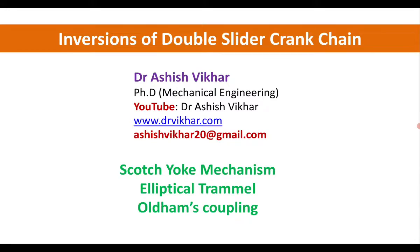There are three inversions of double slider crank chain: the first one is called elliptical trammel, the second one is called scotch yoke mechanism, and the third one is known as Oldham's coupling.